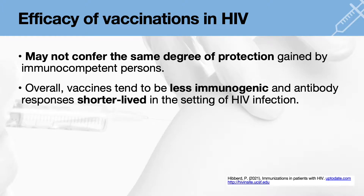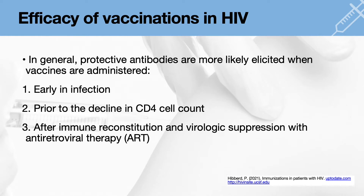With that said, vaccination in people with HIV may not confer the same degree of protection gained by immunocompetent persons. Based on studies, vaccines tend to be less immunogenic — meaning the vaccine's ability to elicit an immune response is lower — and antibody responses are found to be shorter-lived in the setting of HIV infection. In general, protective antibodies are more likely elicited when vaccines are administered early in the infection, before the CD4 cell count drops, or after introduction of antiretroviral therapy to allow for immune reconstitution and reduction of viral levels.